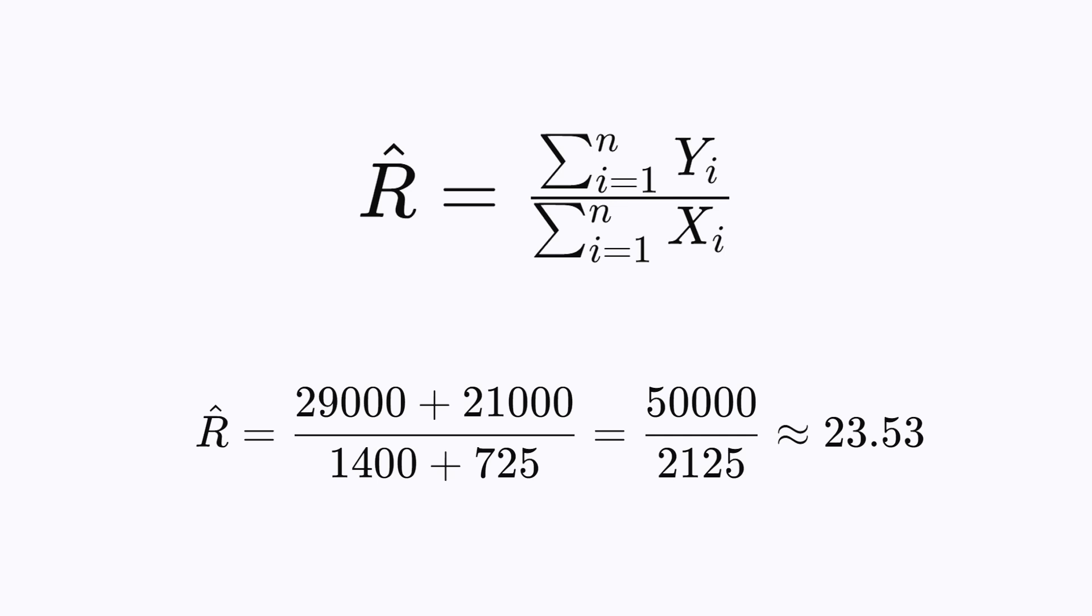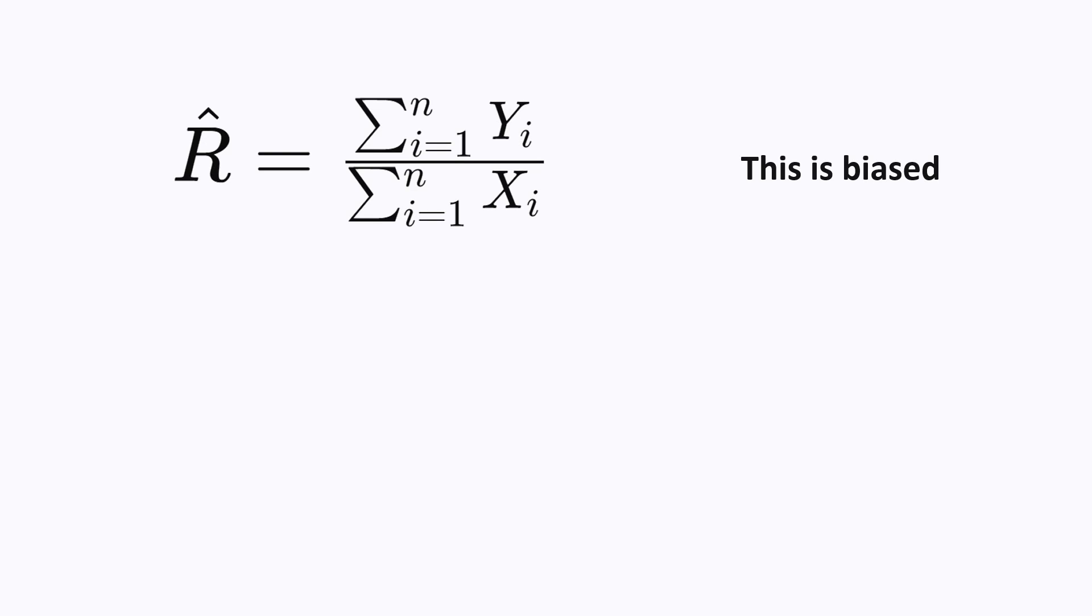But it turns out that this estimator is biased, especially if the samples are small. To see why, just look at the formula for this estimator. It is a ratio between two expected values, which is not equal to the expectation of the ratio.